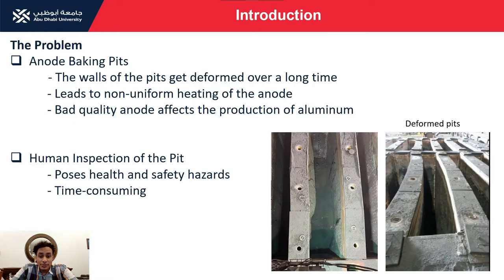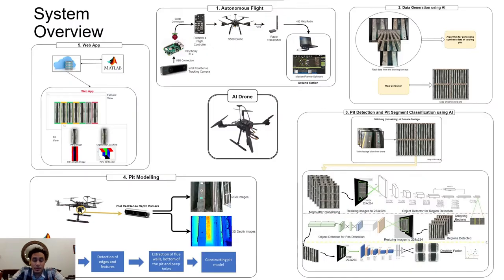The problem with these baking pits is that they get deformed after a long period of time, which leads to non-uniform heating of the anode, which can heavily impact the production of aluminum. Usually human inspection is done, but the major issues are that it poses health and safety hazards to the humans and it takes a huge amount of time to carry out the inspection.